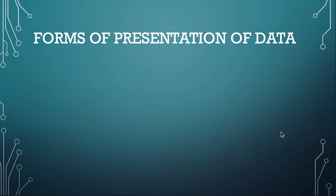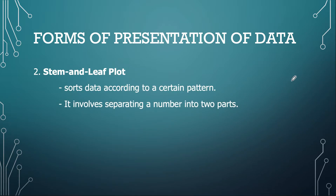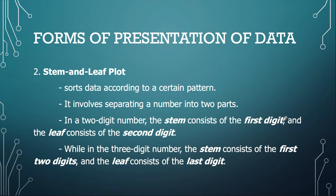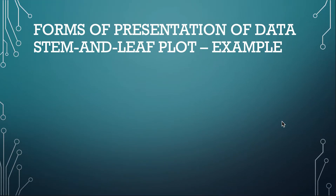The second way of presenting data is via the stem and leaf plot. This sorts data according to a certain pattern and involves separating a number into two parts. For a two-digit number (10–99), the stem consists of the first digit and the leaf consists of the second digit. For a three-digit number (100–999), the stem is the first two digits and the leaf is the last digit. For a one-digit number, the stem is zero and the number itself becomes the leaf.